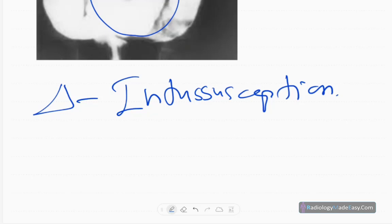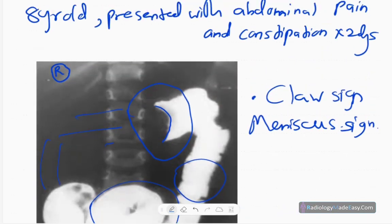In children, we usually do pneumatic or hydrostatic reduction by doing ultrasound scans. That concludes case number 25 in GIT contrast studies.